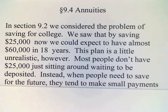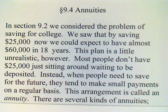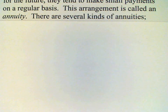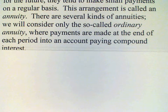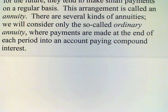Instead, what people usually do when they want to save money is they make small payments on a regular basis into a bank account, and this arrangement is known as an annuity. There are several kinds of annuities, but the only one that we will look at is a so-called ordinary annuity, where payments are made at the end of each period into an account which pays compound interest.